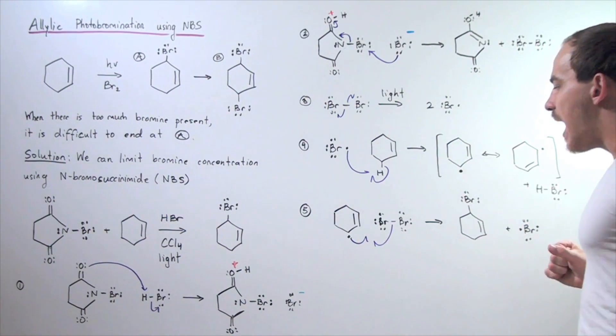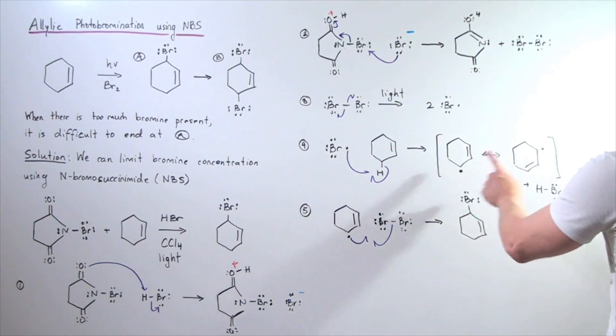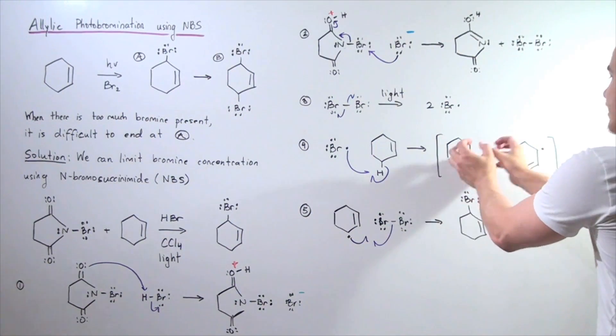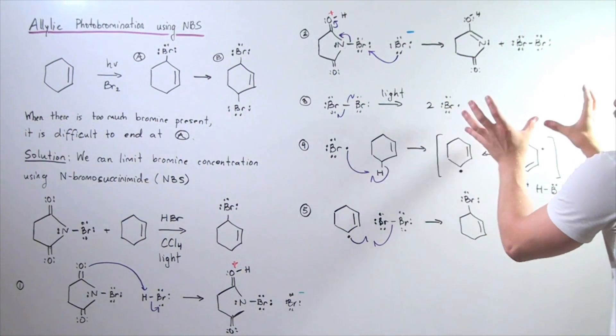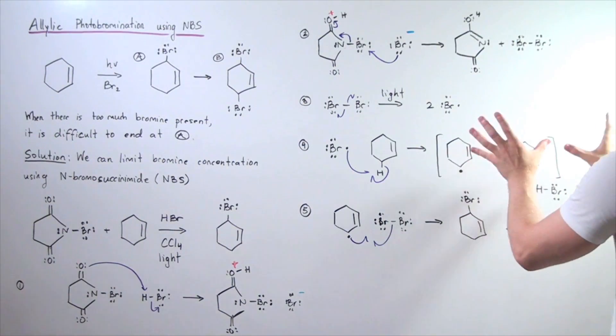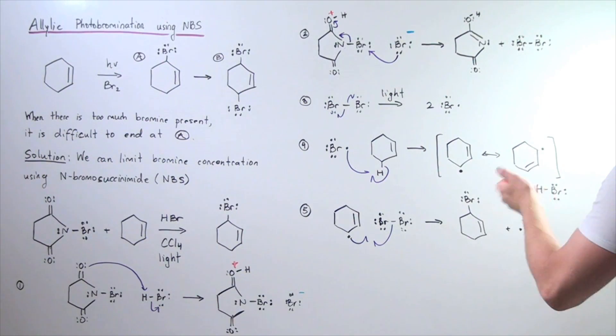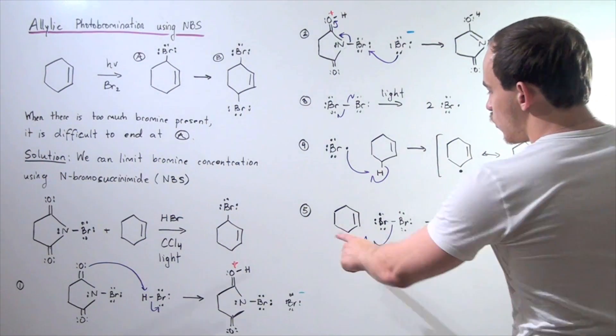Now, in the final step, we have one of these molecules. Let's say this molecule. Well, actually, this molecule is one molecule. The actual structure of this resonance-stabilized molecule is somewhere in between these two. But let's say, for instance, we take this one.